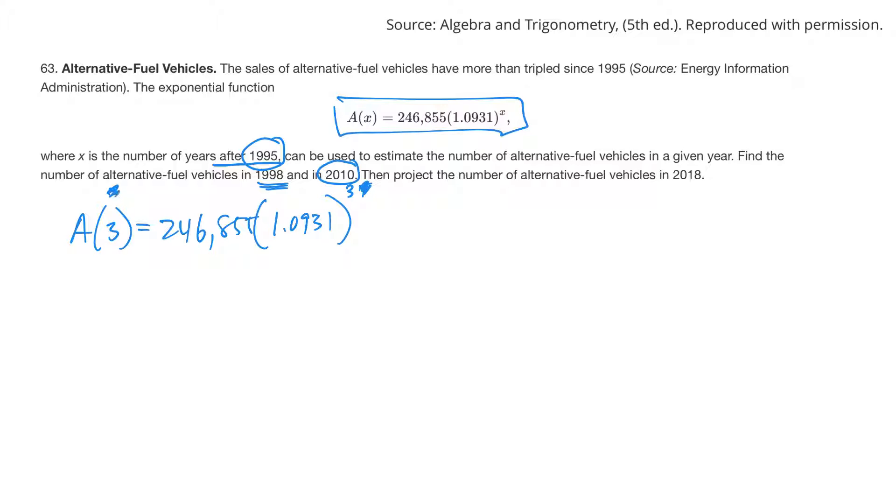Let me just do the one with a 3 on the calculator to make sure it works. So 246,855, bracket, 1.0931, bracket, to the third, go. So it looks like there's 322,419.7. Probably can't be 0.7 of a car, so I'd probably just round that up to 322,420 cars. Hopefully that helps with those exponential function questions.